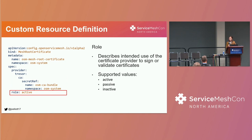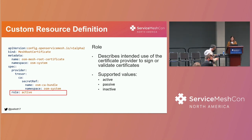The role field is the key aspect of what makes the MRC resource declarative. It describes how the user intends for the certificate authority, which is accessed by the certificate provider, to be used within the service mesh. By inspecting this field, the MRC controller can determine how certificates should be signed and which certificate authorities should be distributed for validation.